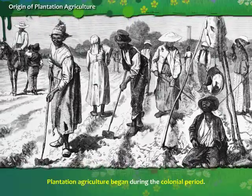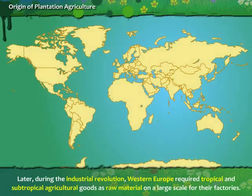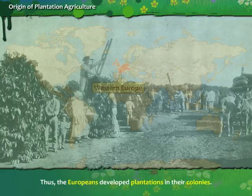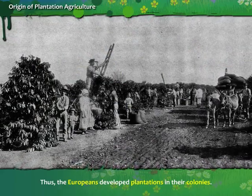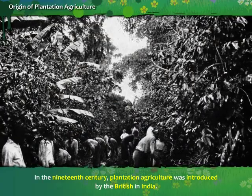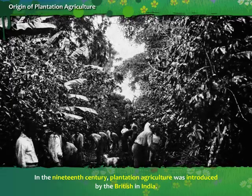Plantation agriculture began during the colonial period. Later, during the industrial revolution, Western Europe required tropical and subtropical agricultural goods as raw material on a large scale for their factories. In this way, the Europeans began setting up plantations in their colonies. In the 19th century, plantation agriculture was introduced by the British in India.